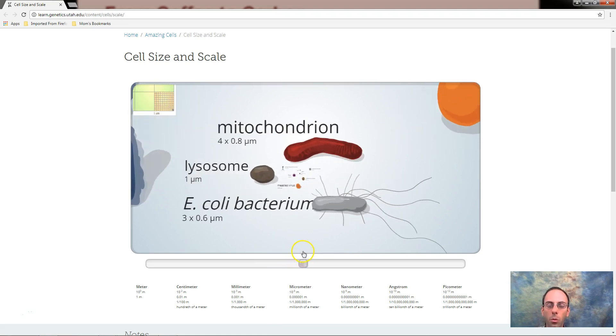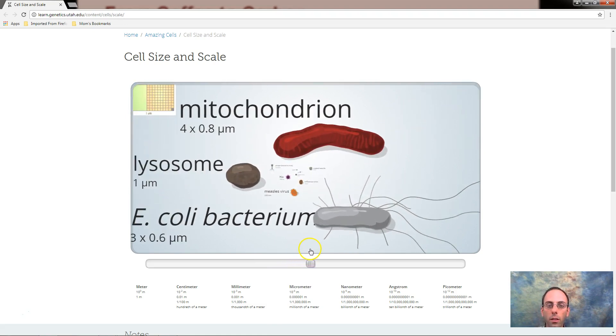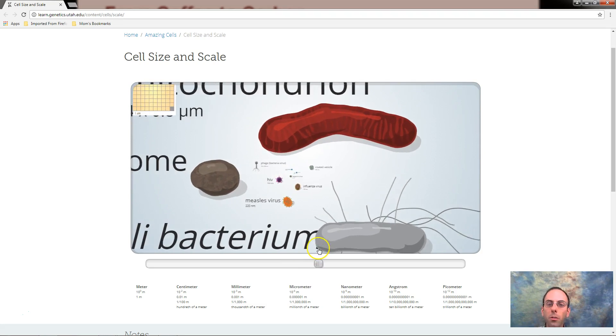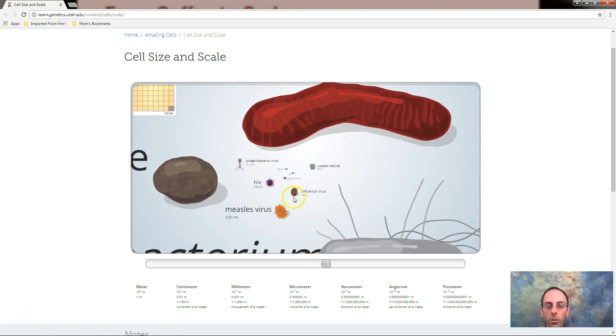E. coli. Lysosomes, which we'll learn about when we do organelles. A couple other small things here. Different viruses here being small. HIV. Influenza.